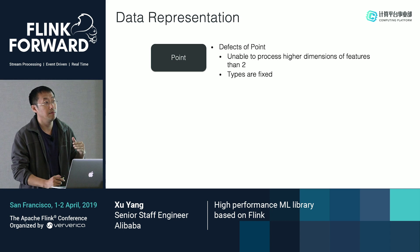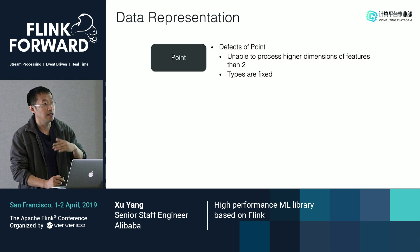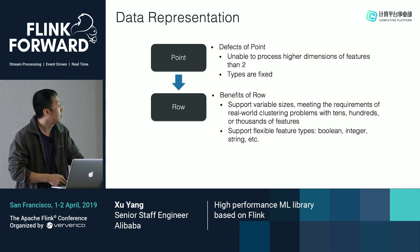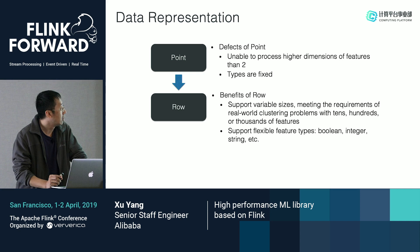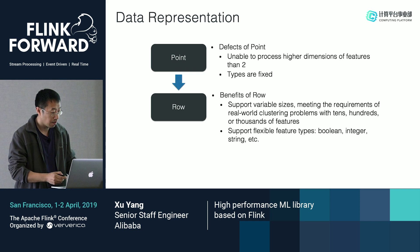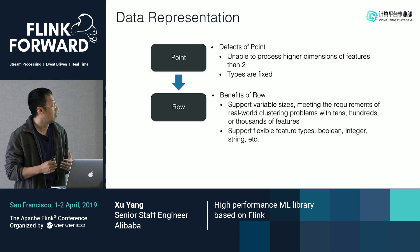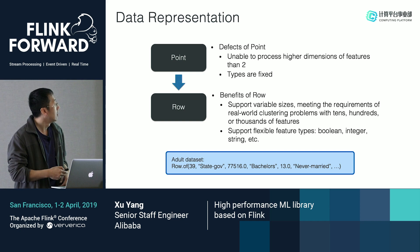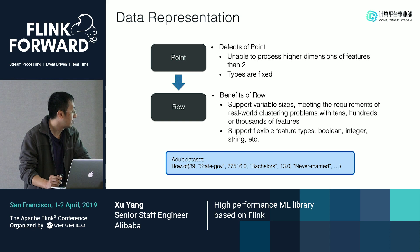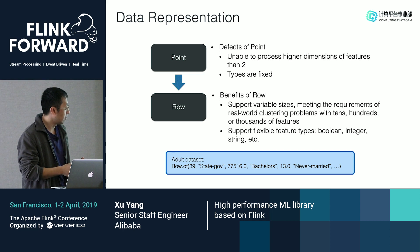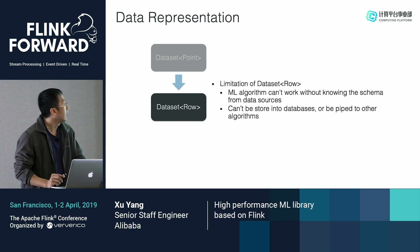In practice, we will need higher-dimension data, and the data may have other types such as integer, long, or float. So we prefer to use the Row type. It can support variable size — maybe even hundreds or thousands of dimensions. Also, it can define each feature type. So the Row type will extend the representation of input and output. For a real dataset, it may include an integer, a string, or a double value — all of which can be expressed by the Row.